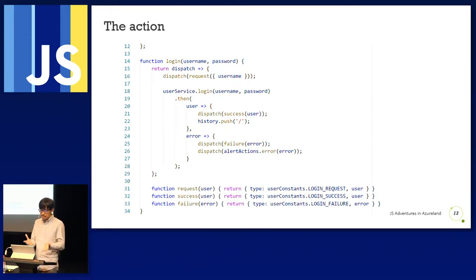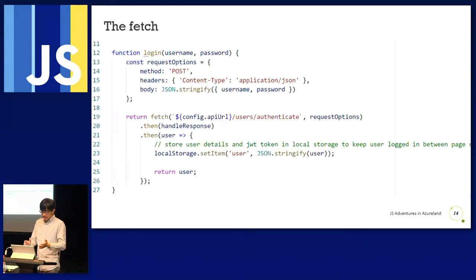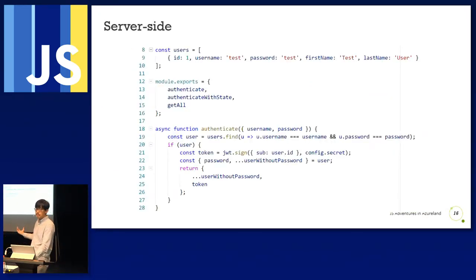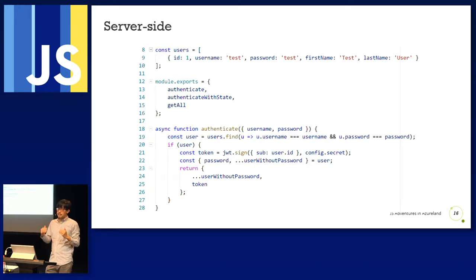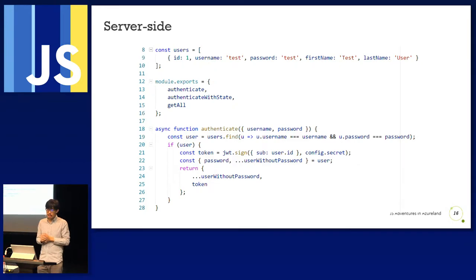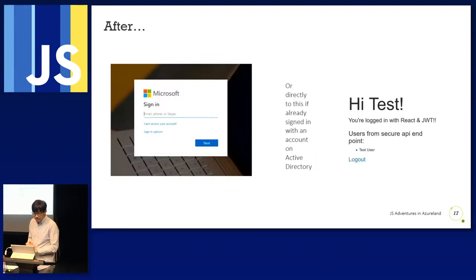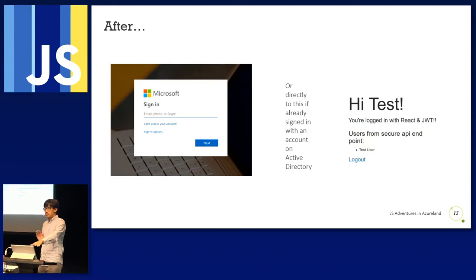The existing action is simple: the user logs in, the action results in a POST to the backend with the username and password in the body. The backend uses that to find from an array, and if found, creates a token and returns the user object along with the token. What I want to achieve after wrapping around is that when the user wants to log in, they have the option to go to Microsoft Azure AD login. And if already signed in, they go straight to the app.